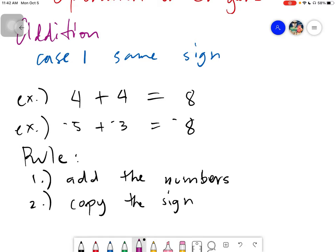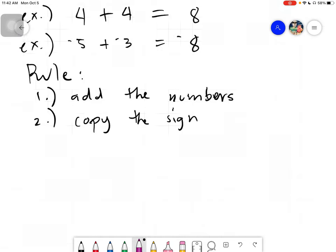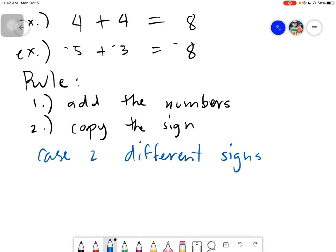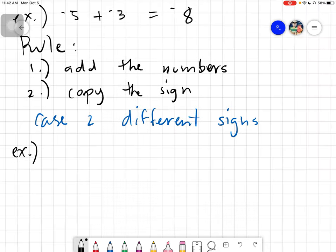But, the other one that we will discuss, which is case number 2, which is different signs. What we do here is instead of adding, you will subtract. But our subtraction is you will subtract the smaller number from the larger number. So, let's have an example first, to visualize.